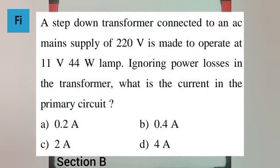Question says a step-down transformer connected to an AC main supply of 220 volt is made to operate at 11 volt 44 watt lamp. Ignoring power losses in the transformer, what is the current in the primary circuit?